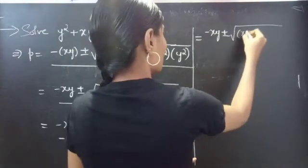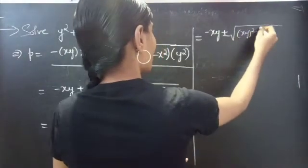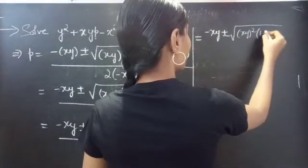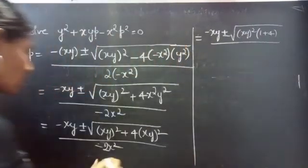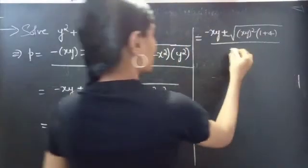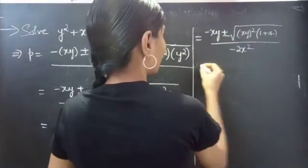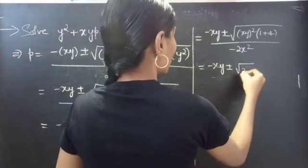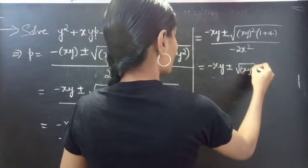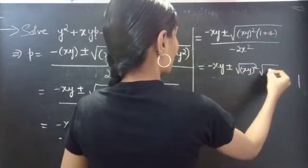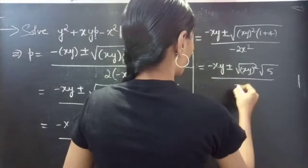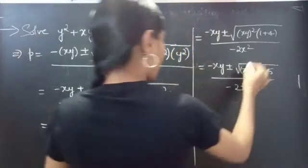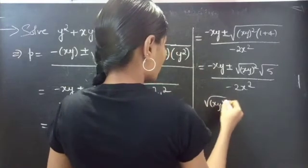This gives us minus xy plus or minus square root of (xy) squared times (1 plus 4), which is 5, divided by minus 2x squared. So we have square root of (xy) whole squared inside the expression.